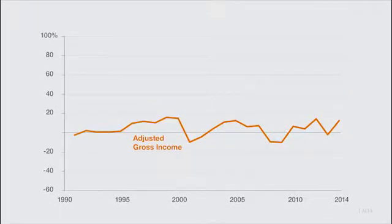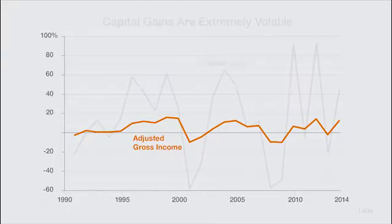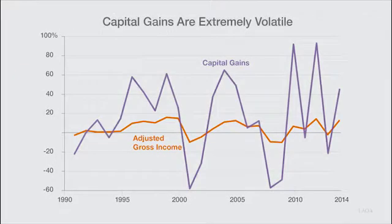To show capital gains we need to extend the range of this graph from negative 60 percent at the bottom all the way up to a 100 percent increase at the top. Capital gains are a small share of income but they add a lot of volatility.